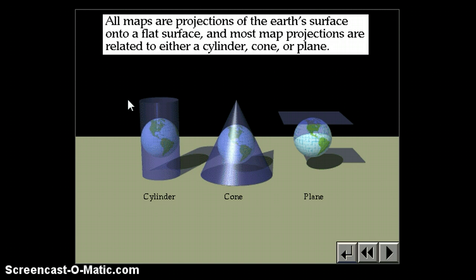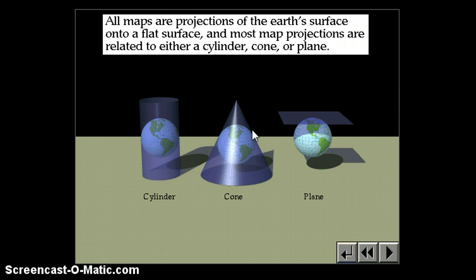A cylinder shape creates a Mercator projection. You could put a cone over the Earth, touching at more of a mid-latitude, and that creates something called a conic projection. Or you could take a plane — a flat surface that just touches at one point — and that is called a planar or azimuthal projection.